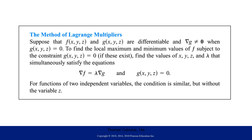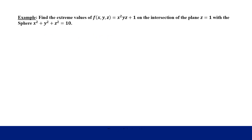In this video I'm going to show an example for how to find the maximum and minimum values of a function using the method of Lagrange multipliers. In order to use this method you have to have a constraint equation, called G, set equal to zero. We're going to find values of X, Y, and Z, and a scalar lambda, that satisfy the relationship: the gradient of F equals a lambda multiple of the gradient of G.